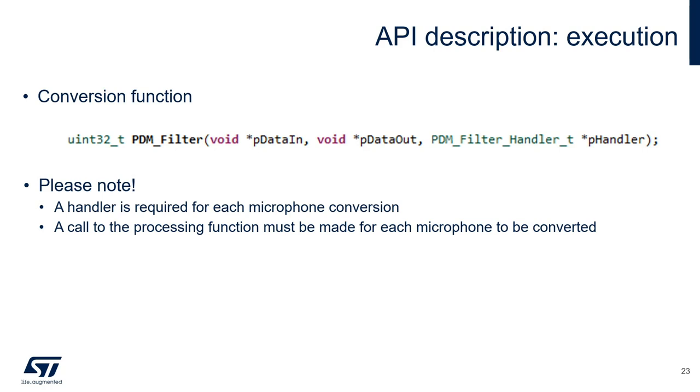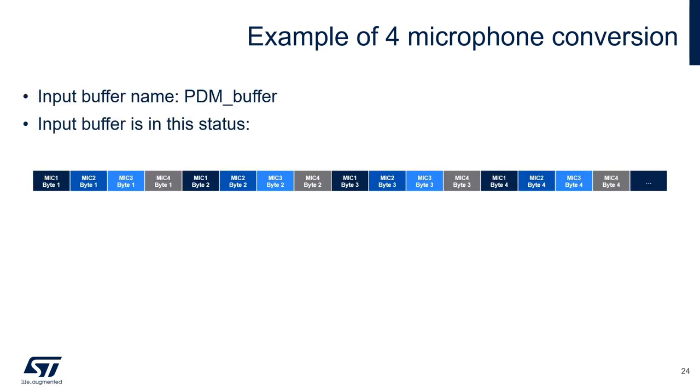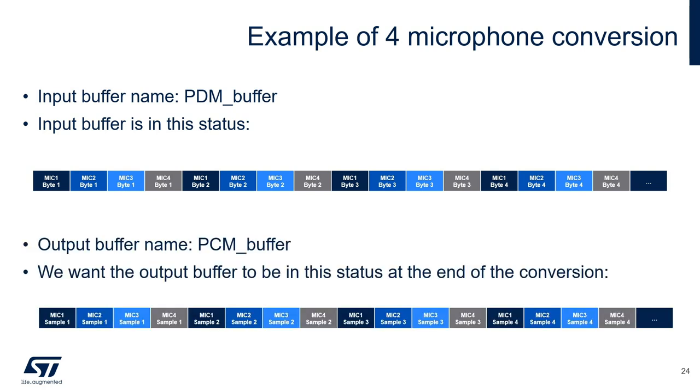Let's go in deep to see how the whole process works. In the following example, we want to perform PDM to PCM conversion for four microphones. We have an input PDM buffer called PDM_buffer with the bytes interleaved for the four microphones, as we saw previously. So here is the status of the buffer just before the conversion. We want the output signals to be placed in an array called PCM_buffer with the samples interleaved as per the standard. Here's the desired status of the output buffer after the conversion.